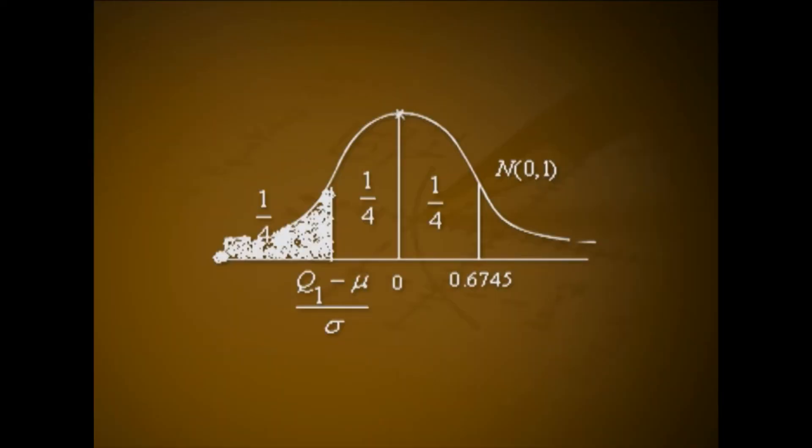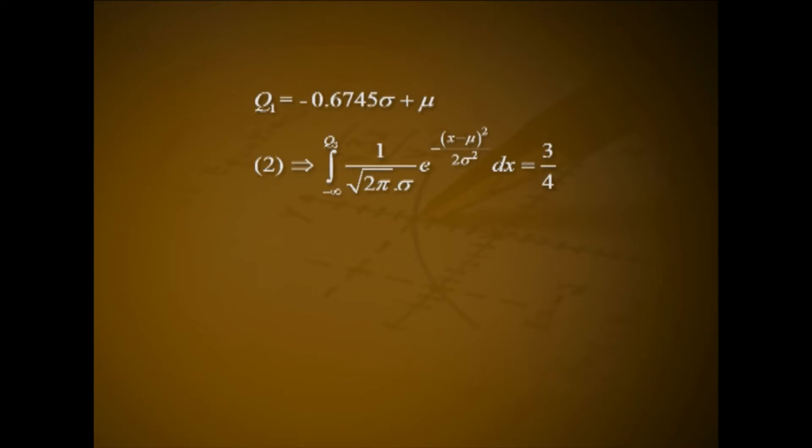That is the area under the standard normal curve from minus infinity to (Q1−μ)/σ is 1/4. It is shown as shaded in the figure. From the standard normal table, we get the area from 0 to 0.6745 is 1/4. Hence, because of the symmetry of the standard normal curve about 0, we get Q1−μ)/σ equal to minus 0.6745. That is Q1 equal to minus 0.6745σ plus μ.